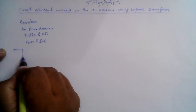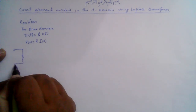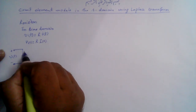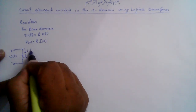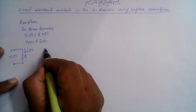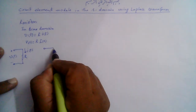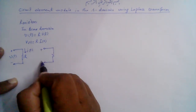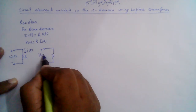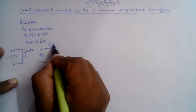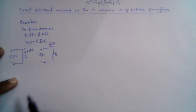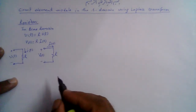So if we have the representation of a resistance in the time domain with current I(t) flowing through it, then the equivalent model in the frequency or S domain will be the same — just that V(t) is replaced by V(s), I(t) is replaced by I(s), and the value remains R. For the resistor this is quite easy.